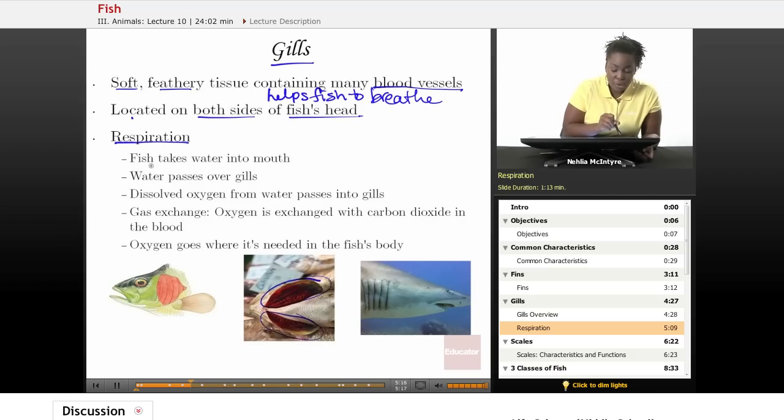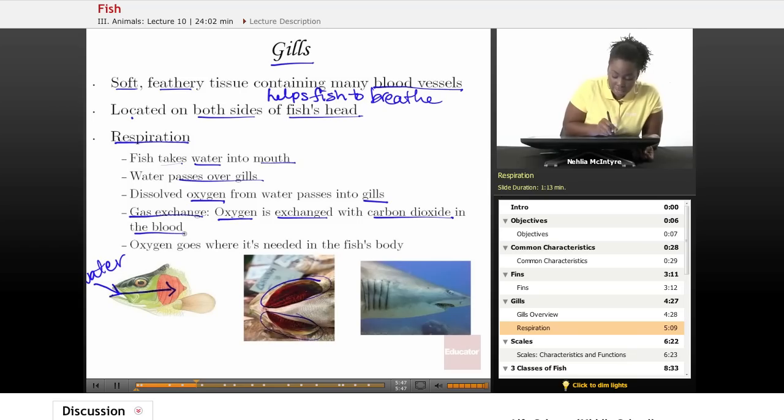What are the steps? Well, the fish first takes water into its mouth, and then the water passes through and over the gills. As that water passes over the gills, the oxygen is collected into the gills, and gas exchange occurs. What is gas exchange? It's when oxygen is exchanged with the carbon dioxide in the blood. So the carbon dioxide gas is actually a waste material that animals want to get out of their body, but the oxygen is needed for all cells within the body to survive.